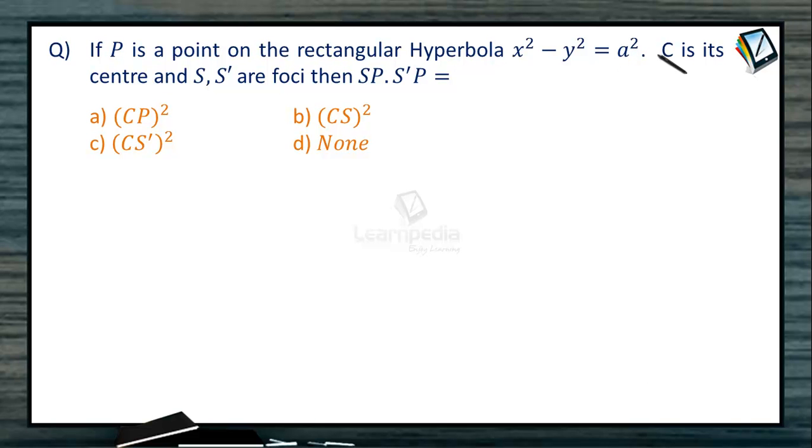Let us have one more question related with the conic section. If P is a point on the rectangular hyperbola x² - y² = a² and C is its center and S and S' are the foci, then SP into S'P product is equal to how much?